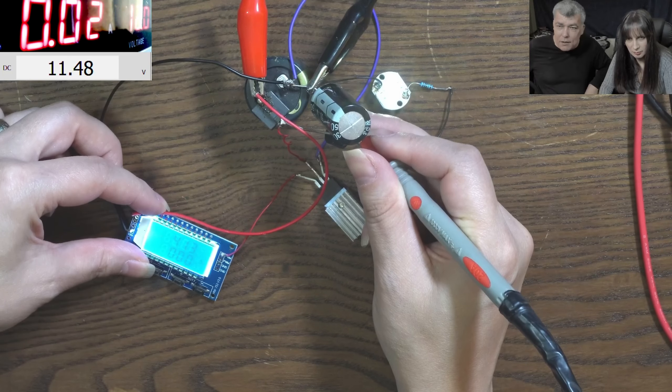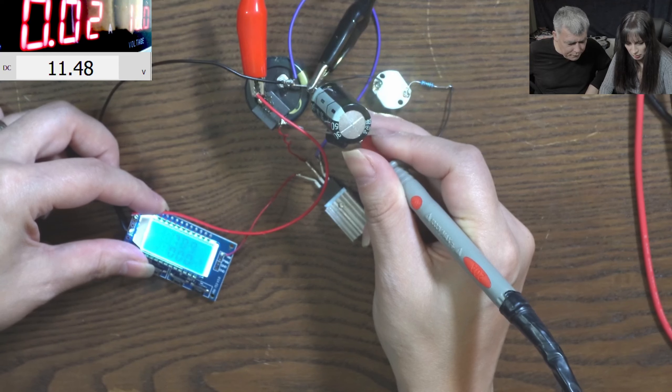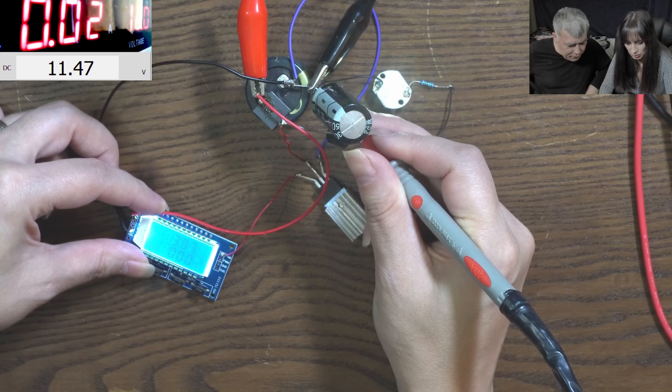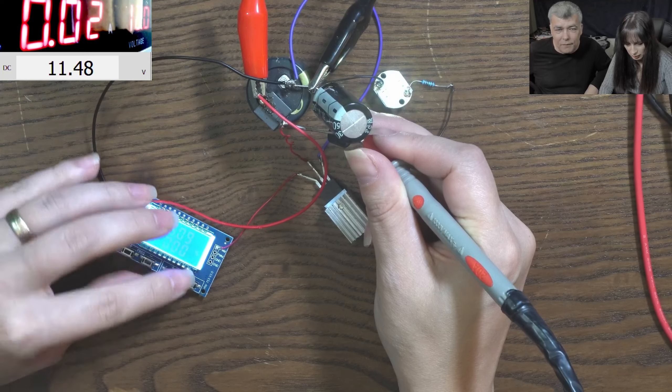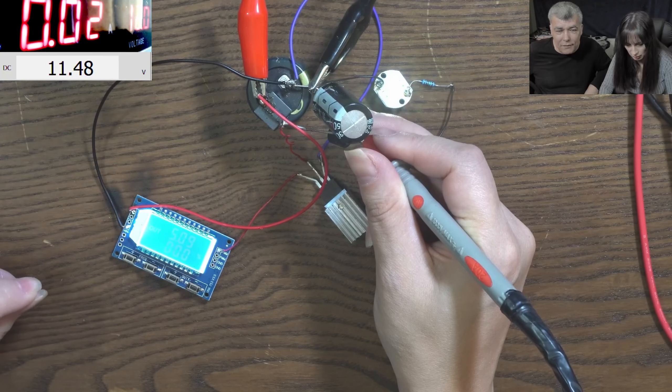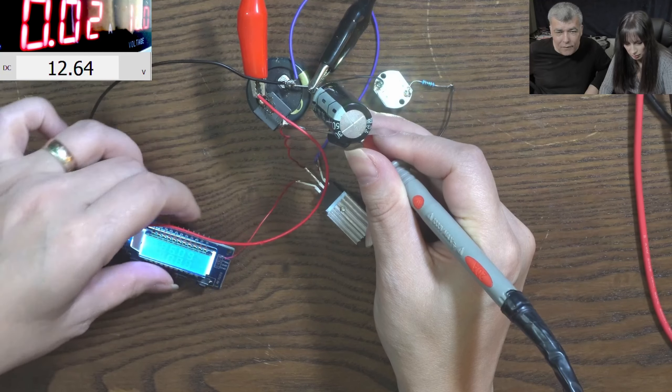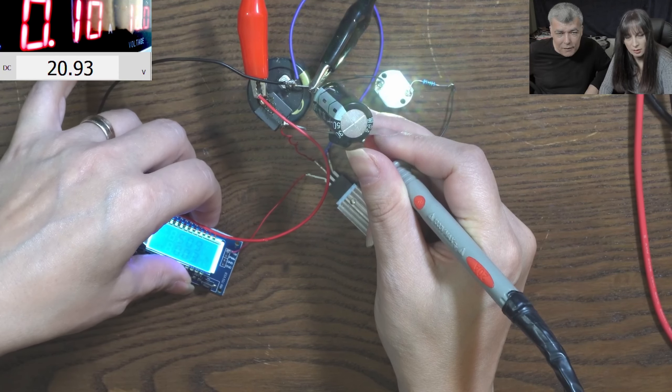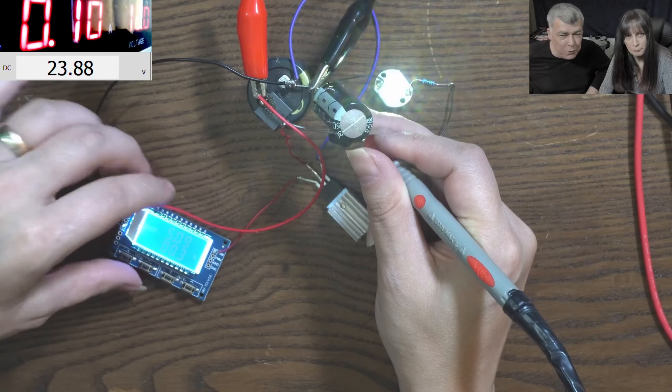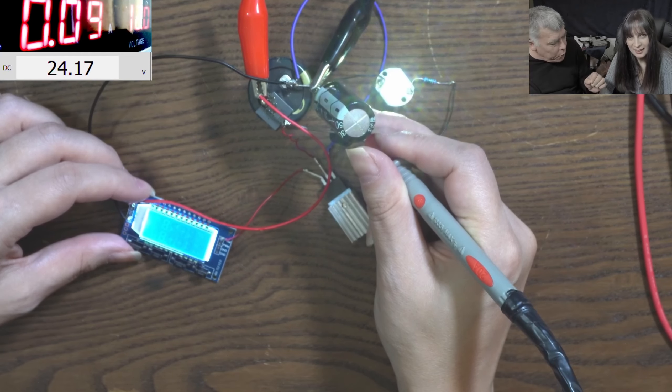We have 400 hertz, just increase it to 5 kilohertz. 5,000 hertz. Now increase the duty cycle to have like 100 milliamps. Okay, I need to put more. Make it 100 milliamps. It's 100. What is the output voltage? 23.